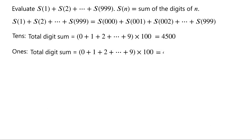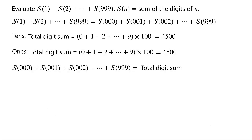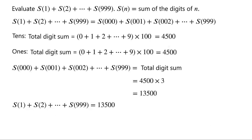Thus, the sum of s(000), s(001), s(002), up to s(999) is equal to the total digit sum from the hundreds place, tens place, and ones place, which is equal to 4500 times 3, which is equal to 13,500. So the sum of s(1), s(2), up to s(999) is equal to 13,500. That's the answer.